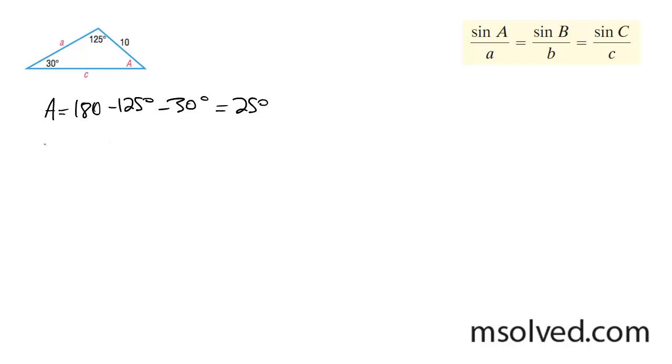Now I'm going to find side A. So I'm going to do sine 25 degrees over A is equal to sine of 30 over 10. Cross multiply.